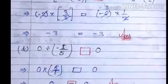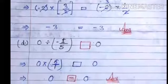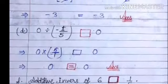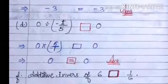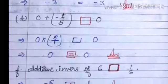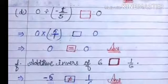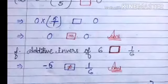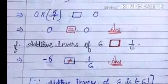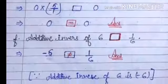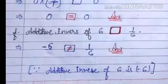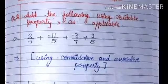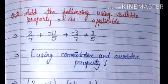The next part: zero divided by minus one upon five — blank box — and zero on the other side. By changing the division sign to multiplication, we get zero multiplied by five upon minus one, which gives zero on this side; the other side also has zero, so we put an equal sign. The next part: the additive inverse of six — equal or not equal to one upon six. The additive inverse of six is minus six, and minus six is not equal to one upon six.